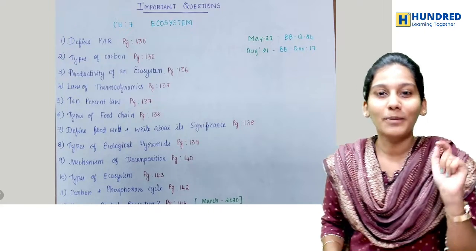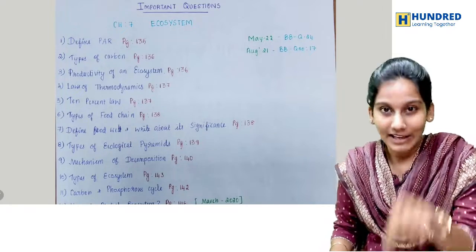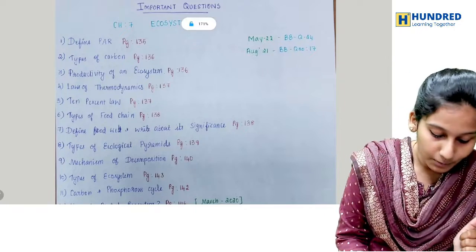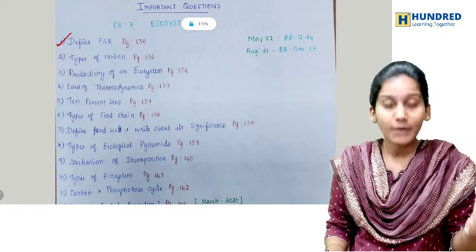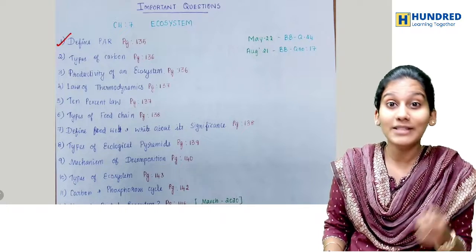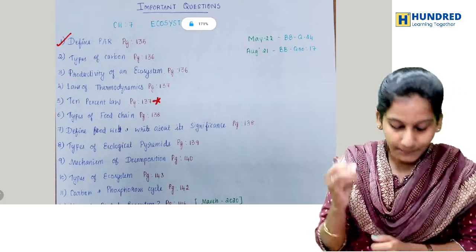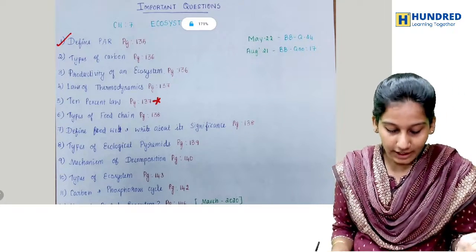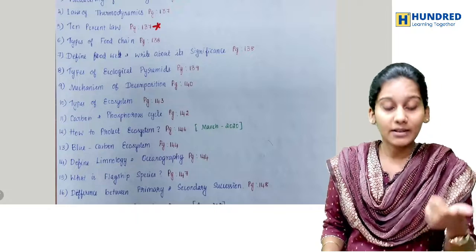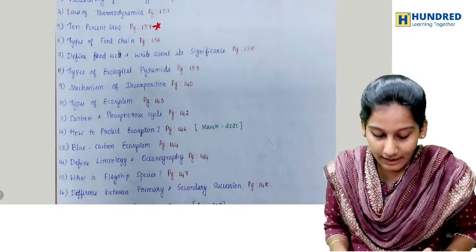PAR full form — comment okay. The question is in the 2023 paper, so it is a very important question. Key topics include: types of carbon, ecosystem productivity, law of thermodynamics, the 10% law, food chain, food web, ecological pyramids, decomposition, mechanism, types of ecosystem, and the carbon and phosphorus cycles.